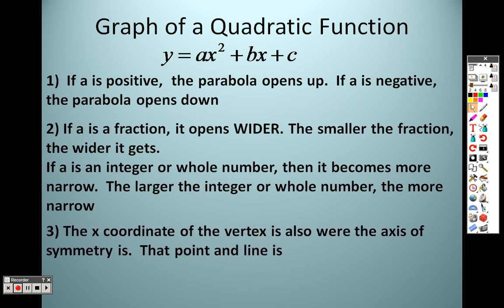And the x-coordinate of the vertex is also where the axis of symmetry is. What that basically means is the axis of symmetry will always go through that vertex point. To find that axis of symmetry, there is a formula there that's negative b over 2a. So negative b over 2a, that is the axis of symmetry. Negative b over 2a.